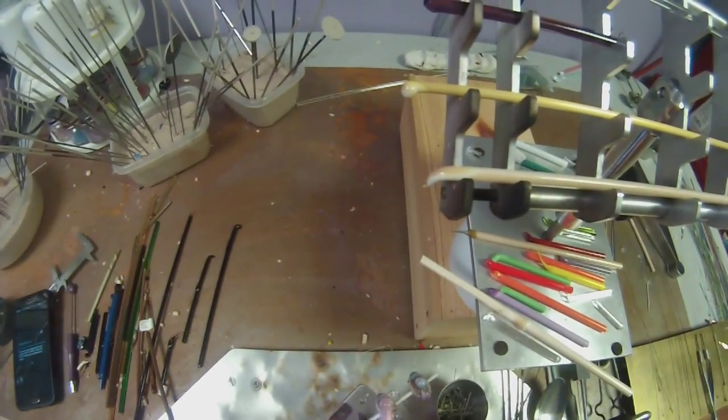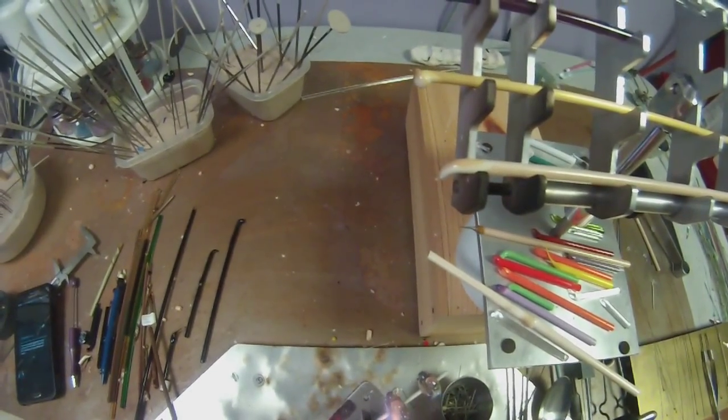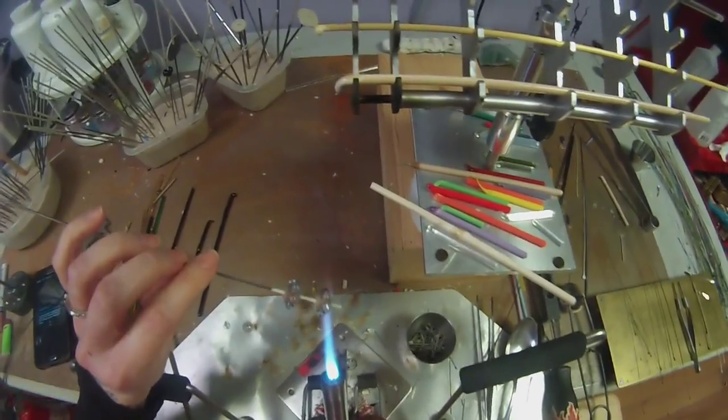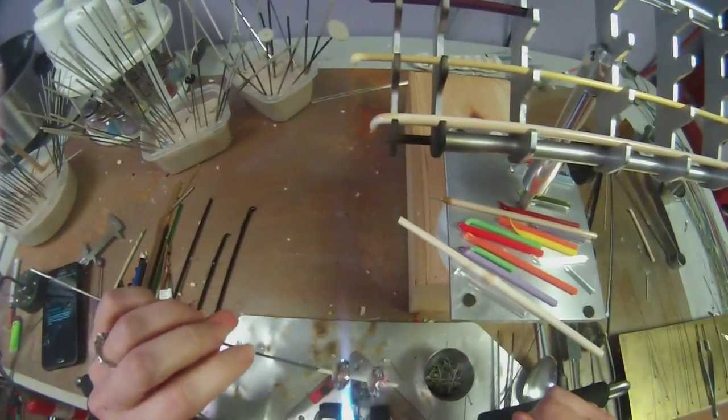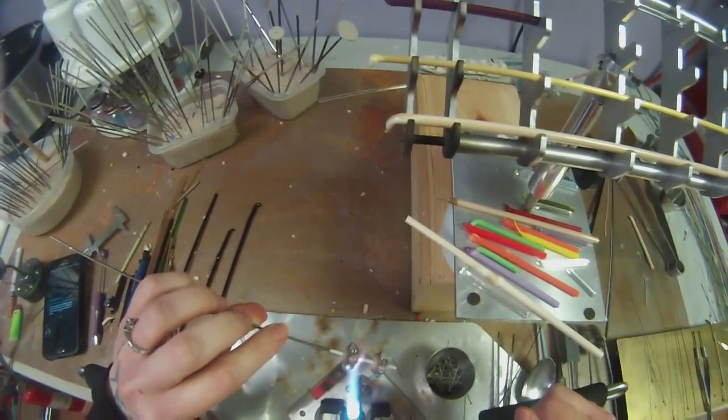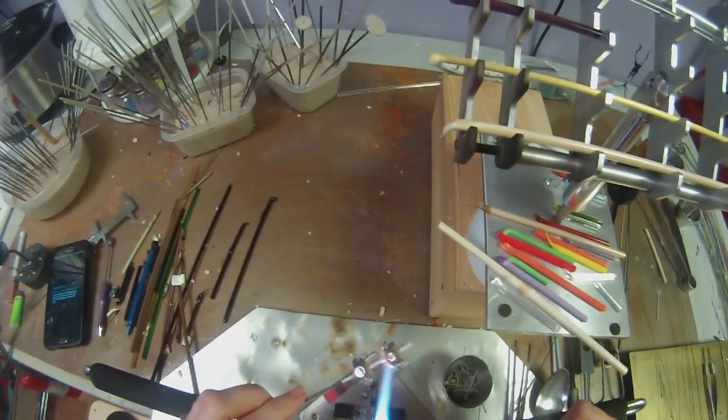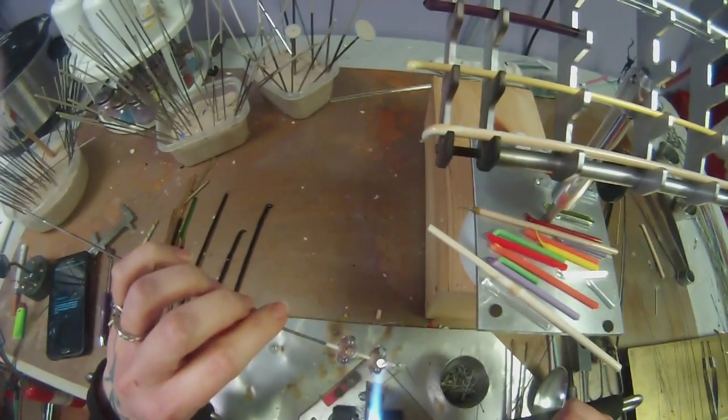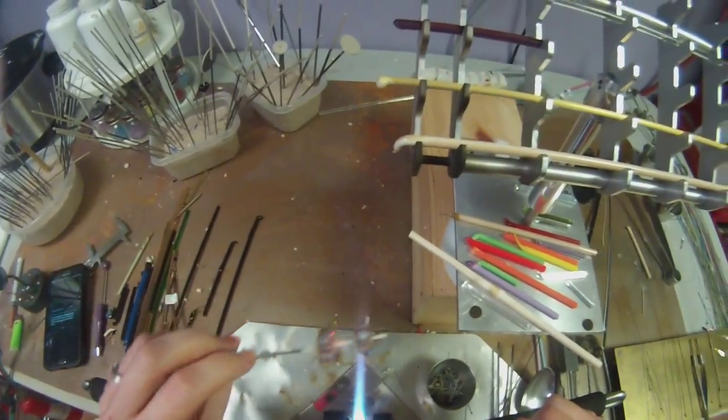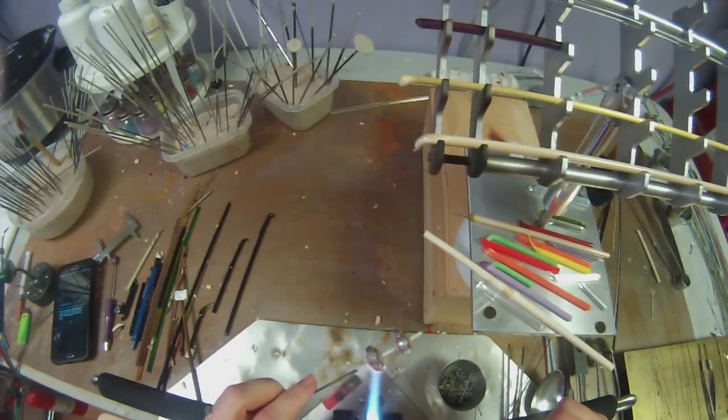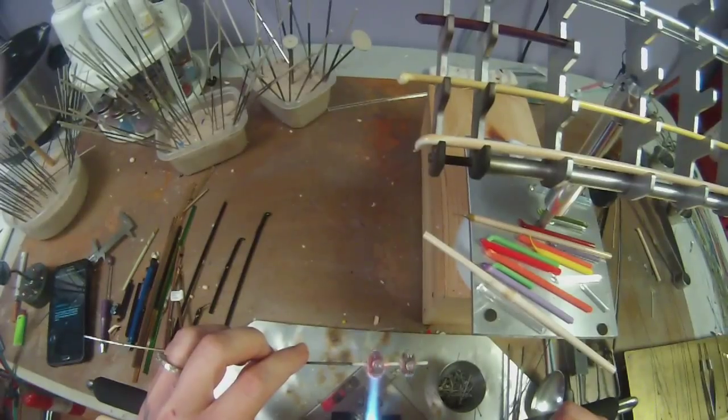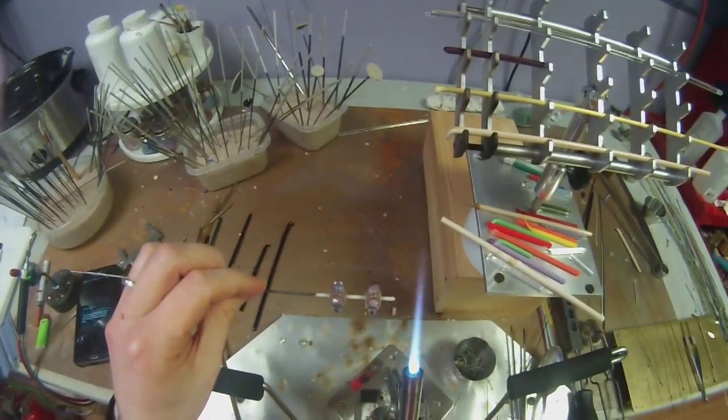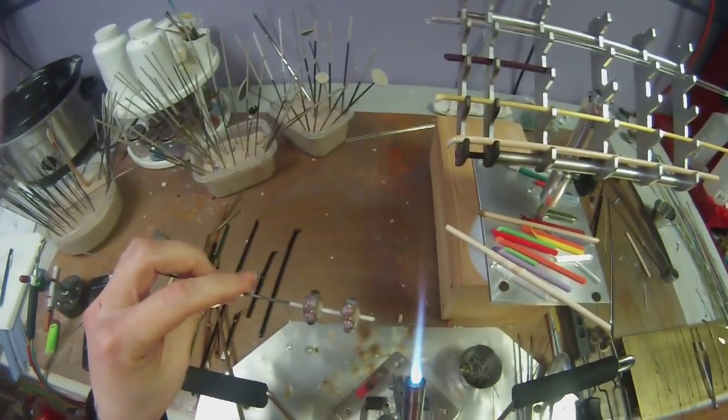I can't talk as fast as I can actually do it. And make sure everything's pretty well melted in. Don't want anything to fall off, or get bumped off in the future. I'm going to let it cool off just a little bit, and then I'm going to get a reduction flame going for those little accent dots.